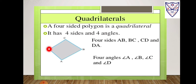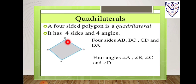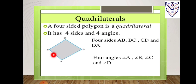Sides — what are sides, students? The line segments that form a polygon are called the sides of the polygon. Now let us understand about adjacent sides. Any two sides of a polygon which have a common end point are called adjacent sides. For example, if I take BC and CB, the common end point is C, so these two are an adjacent pair. Similarly, if I take BA and AB, the common end point is A, so these two are also an adjacent pair. They are known as adjacent sides.